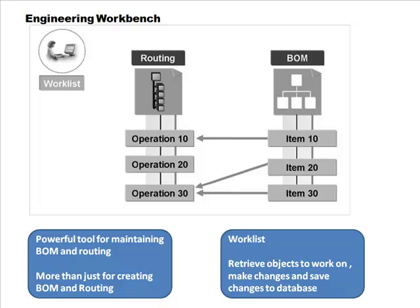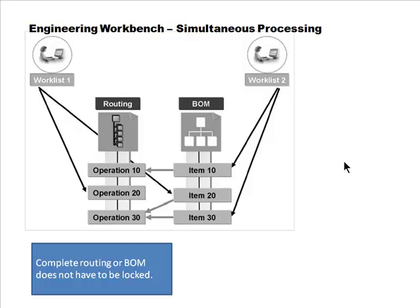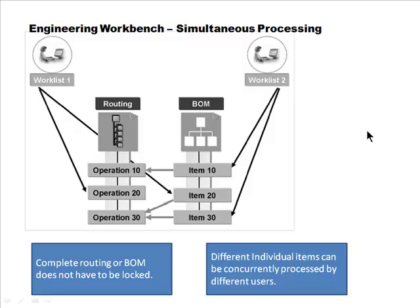With the engineering workbench, you can place a lock on a sub-component of the bill of material and allow other people to work on components you have not locked. That's selective locking. A worklist is a list of things you intend to work on, which is what allows selective locking - you indicate to the system that you're going to work specifically on these sub-components, so it locks those alone, rather than the entire object.